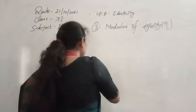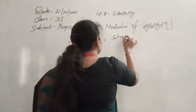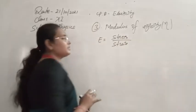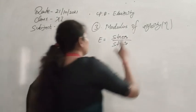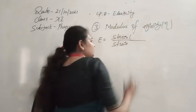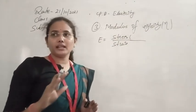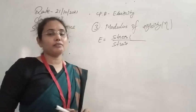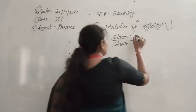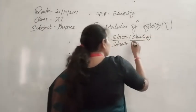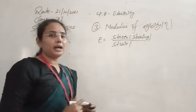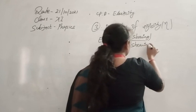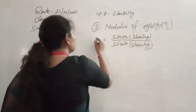Hooke's law states that within the elastic limit, stress is directly proportional to strain, and solving that proportionality gives us a proportionality constant known as the modulus of elasticity or elastic constraint. Here we are talking about the change in shape or change in configuration. That change in shape can be obtained only due to application of a tangential force or shearing force. So the stress produced here is known as shearing stress, and the strain — the change in configuration due to application of stress — is also a change in shape, which we call shearing strain.